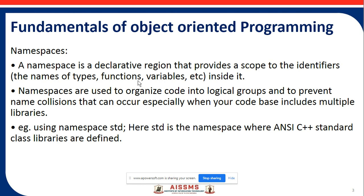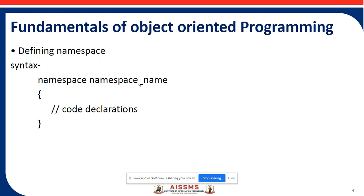Name collisions can occur especially when your code base includes multiple libraries. For example, 'using namespace std' — here, std is the namespace where the standard class libraries are defined. That is why we declare it as 'using namespace std'.